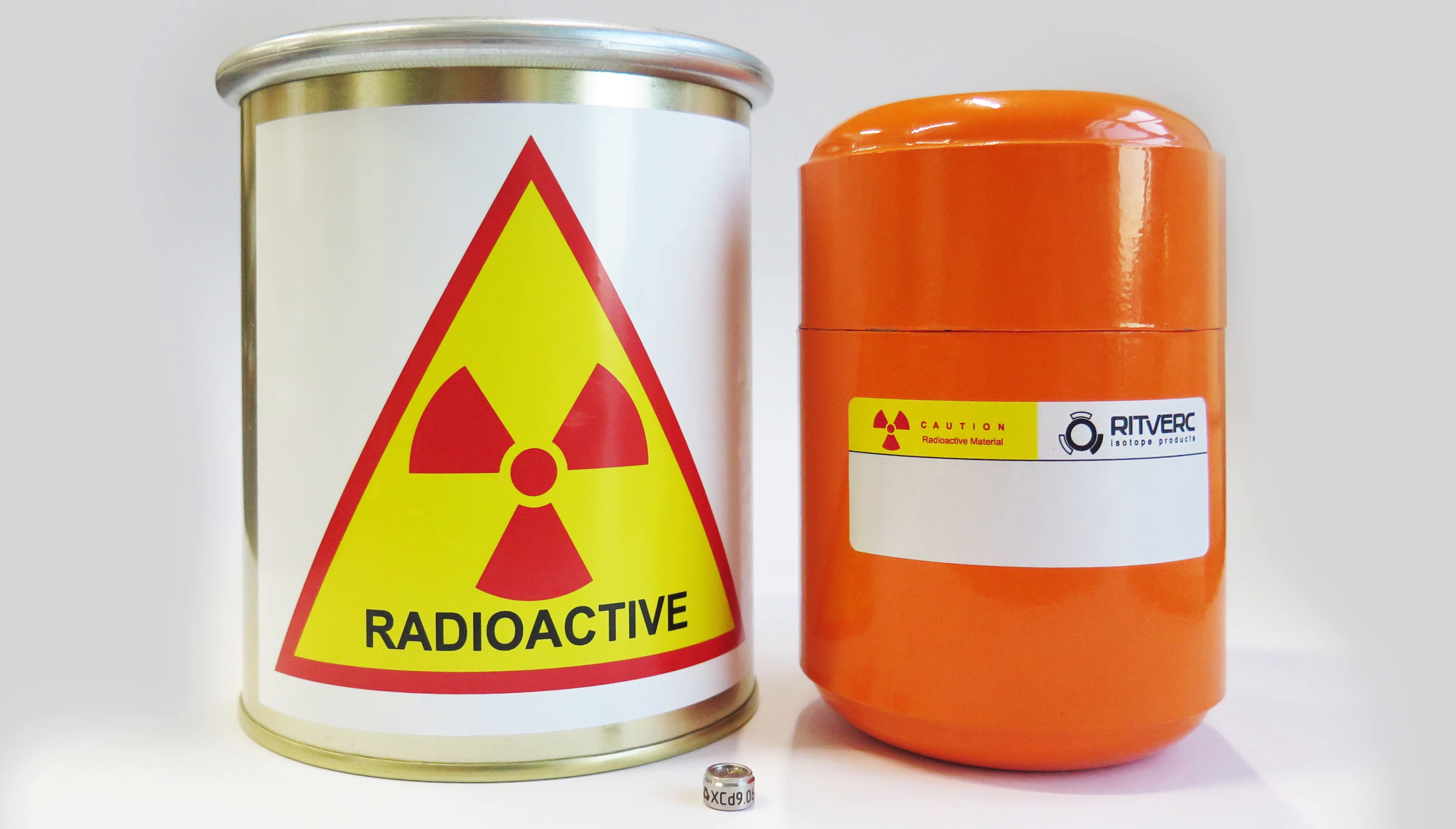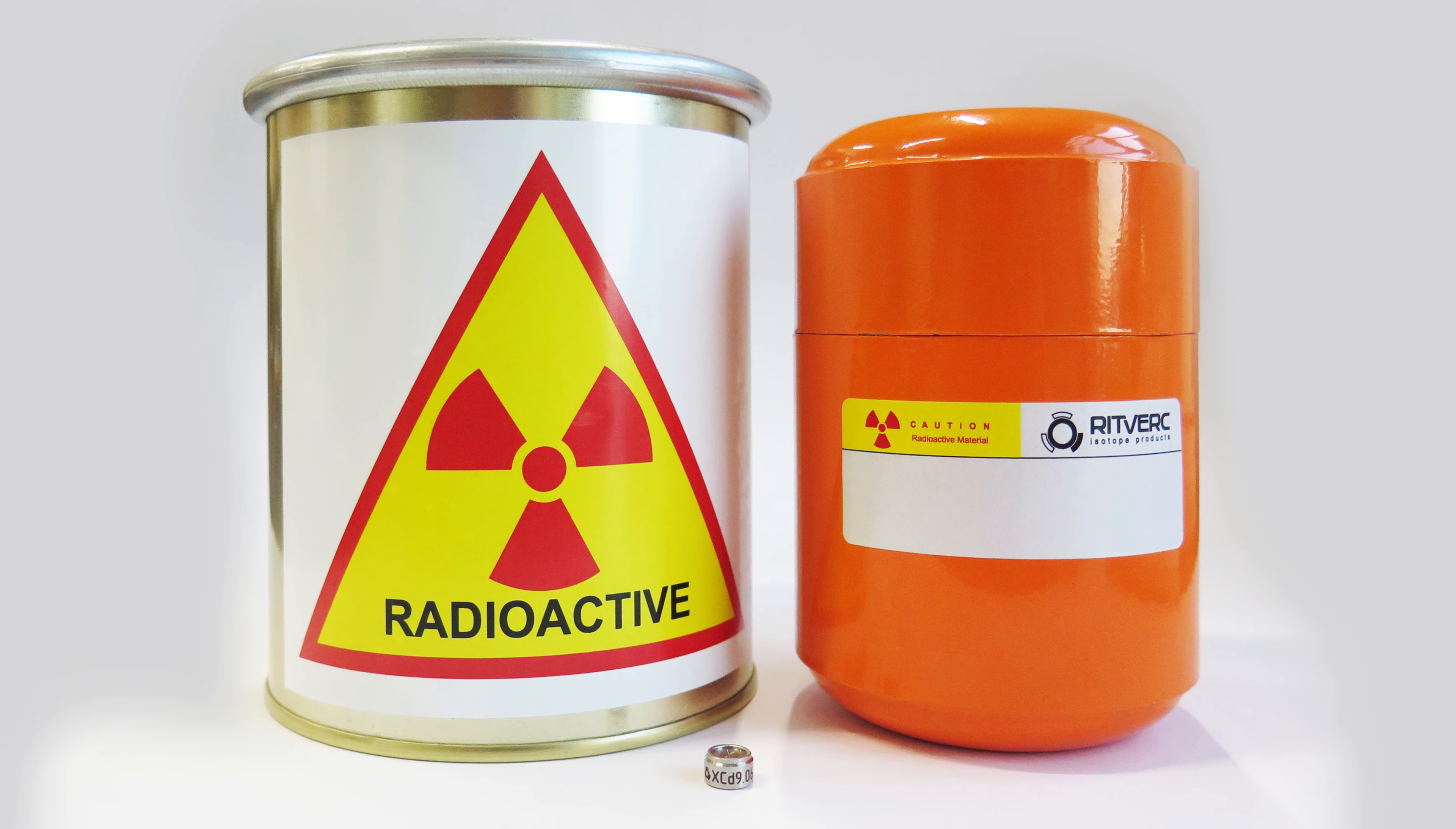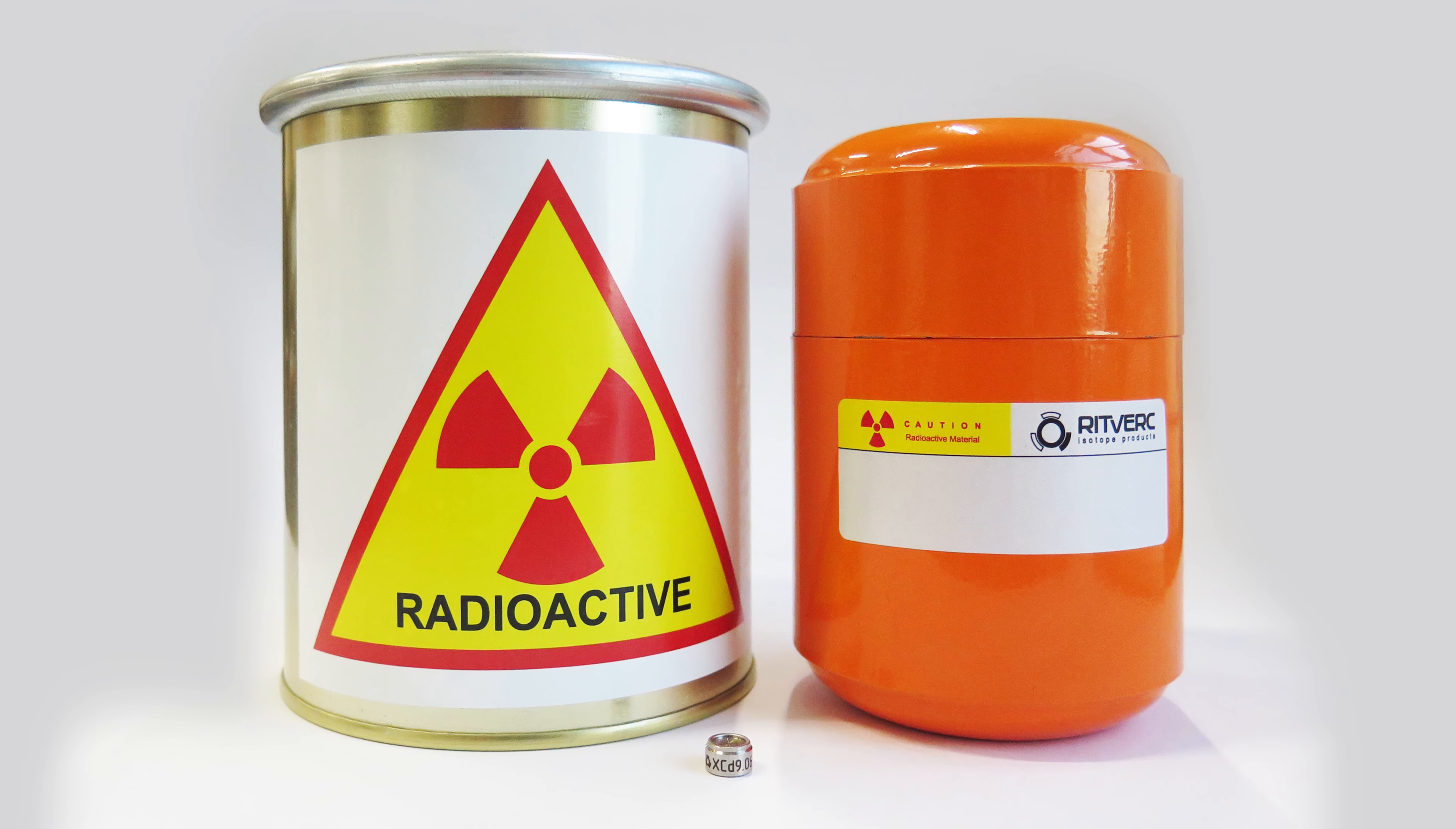Cadmium-109 is an artificial radioactive isotope. It is commonly used to manufacture sealed x-ray radiation sources. Cadmium-109 can be obtained by irradiating stable isotopes in either of two ways.